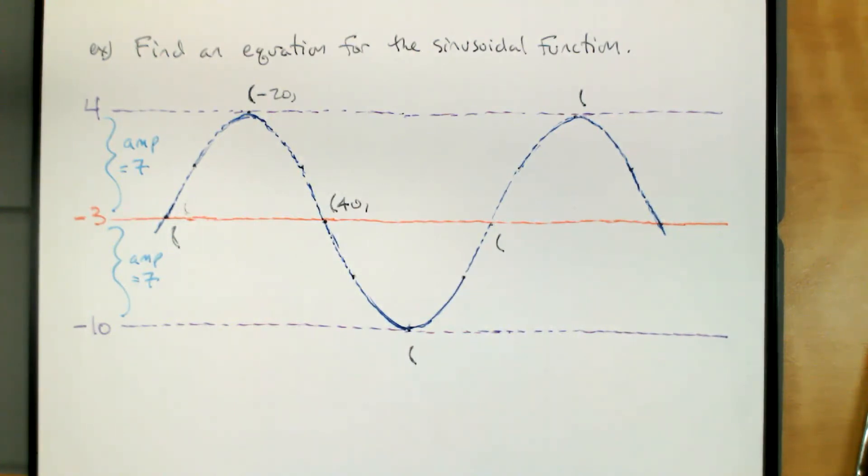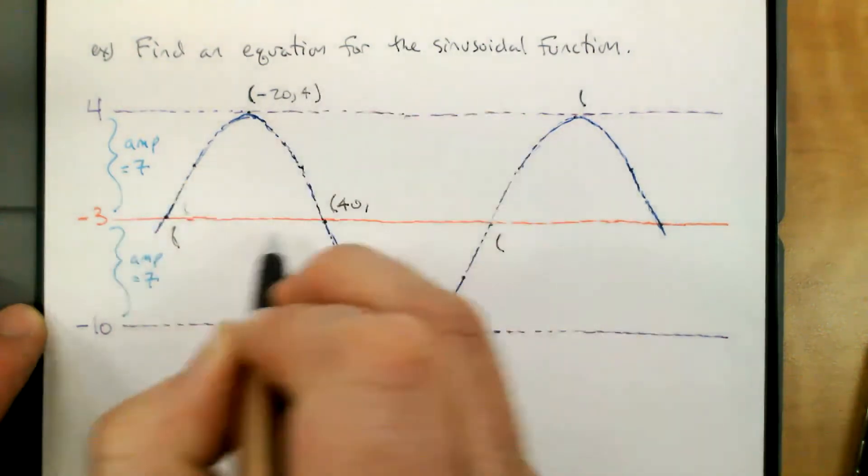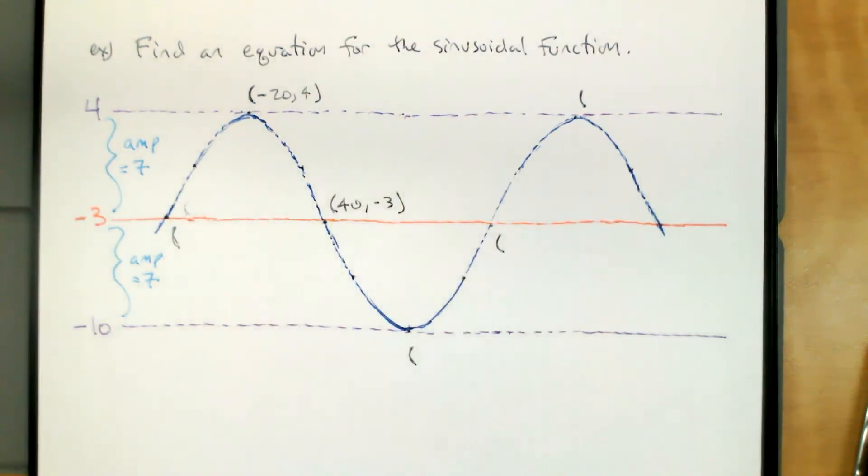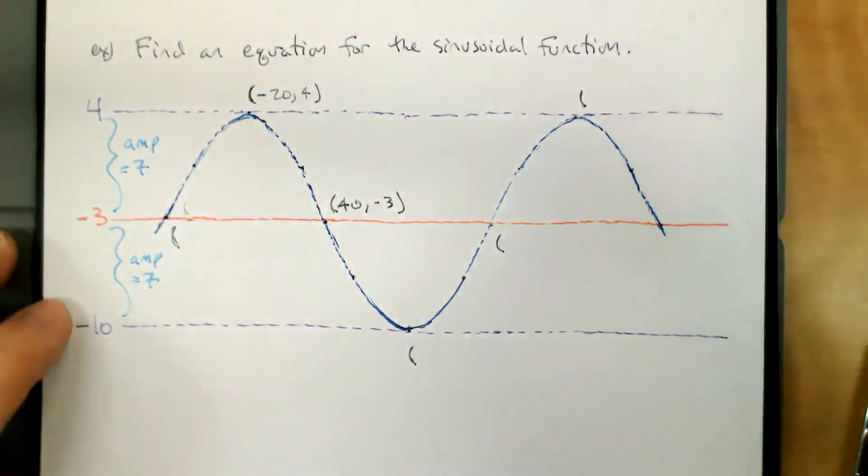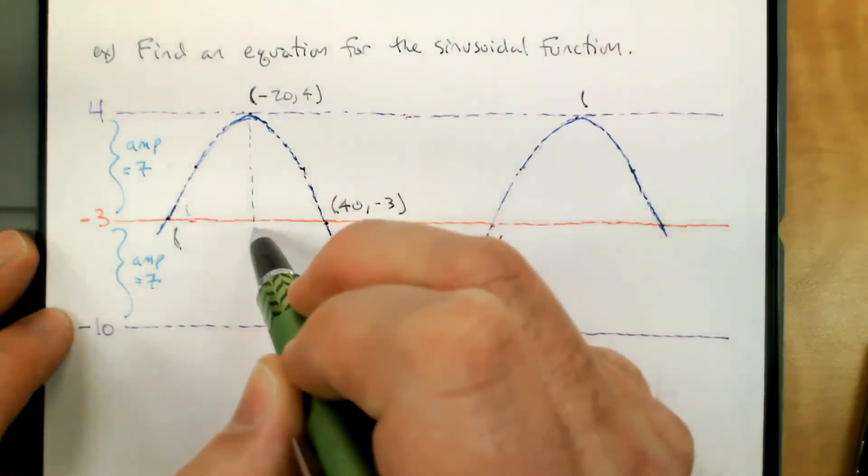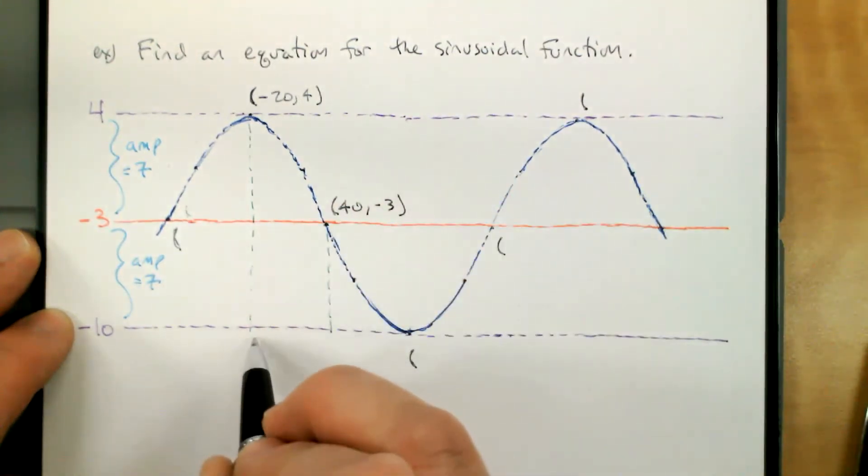Two fifths of the way there. The next thing that we noticed is that I've got one point at negative 20. Now I know that point is at negative 20 and positive four. And so this point is at 40 and negative three. So at the top where the x-coordinate is negative 20, at the middle going down, our x-coordinate is 40. So the horizontal distance between these two, we can use that to figure out what one quarter of the period is.